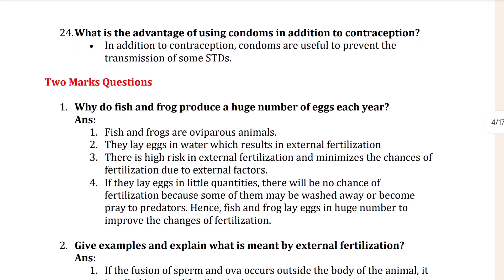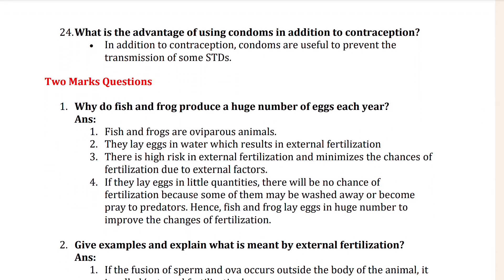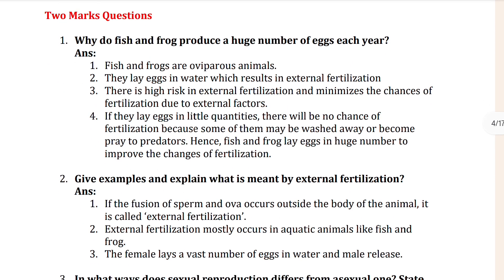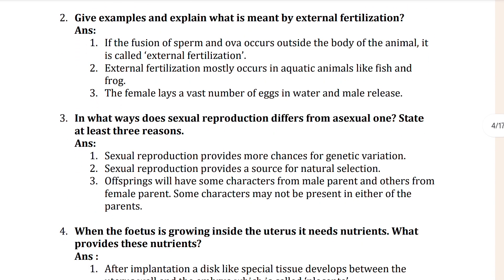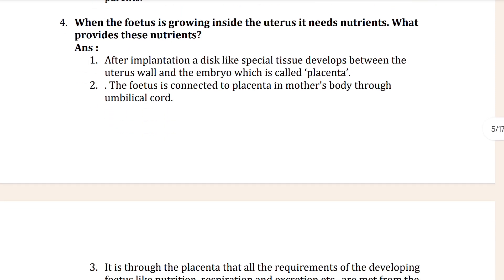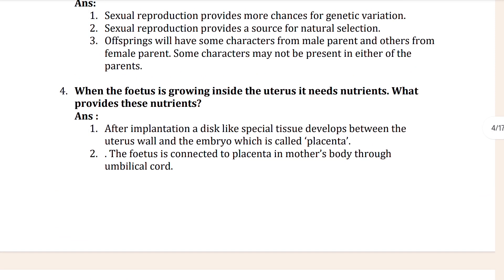If that is complete, then see here - two more questions starting from here. The second question: why do fish and frog produce huge numbers of eggs each year? That is your second question and the third question answer is also shown here. Let's move to the next one - the fourth one.